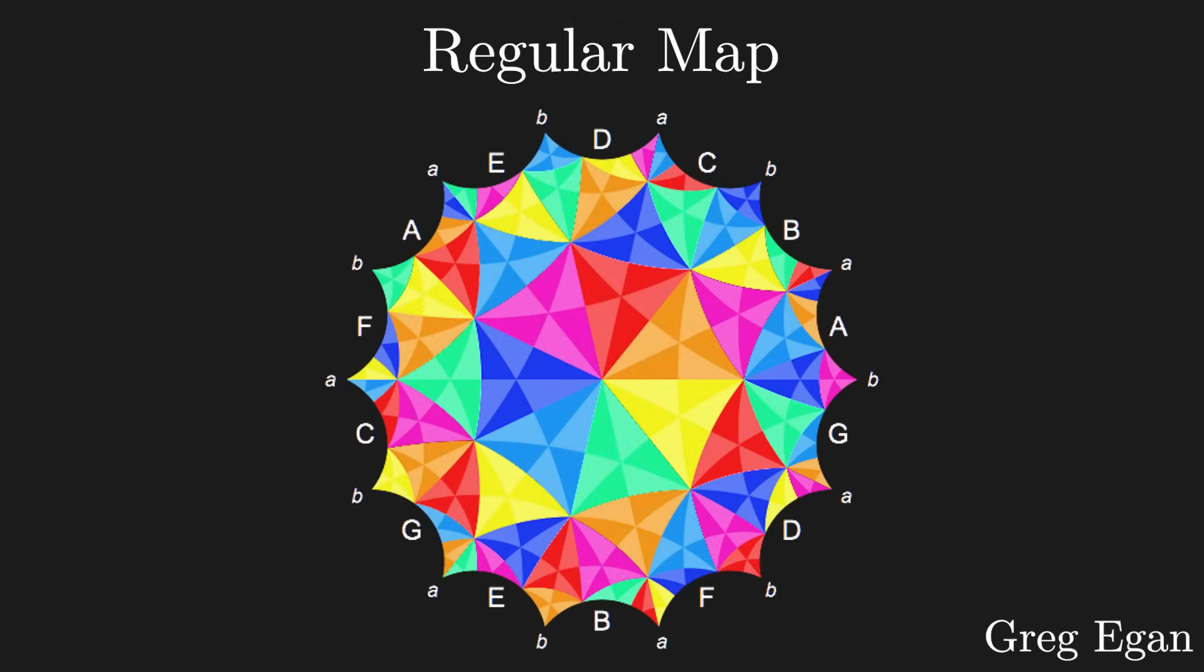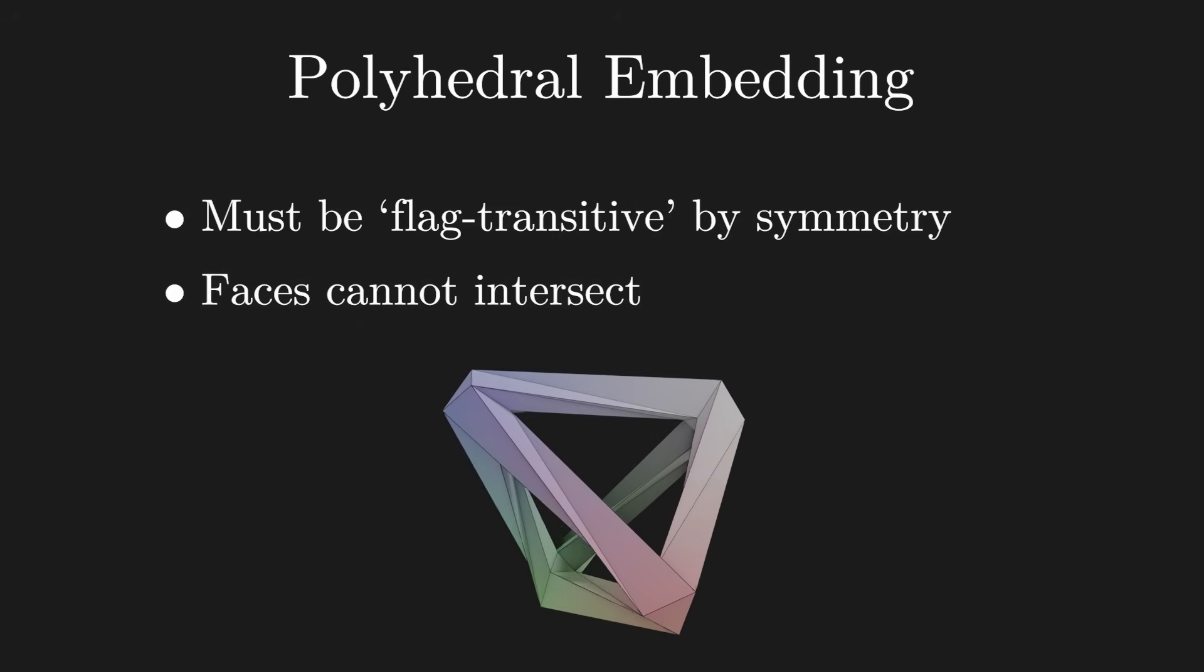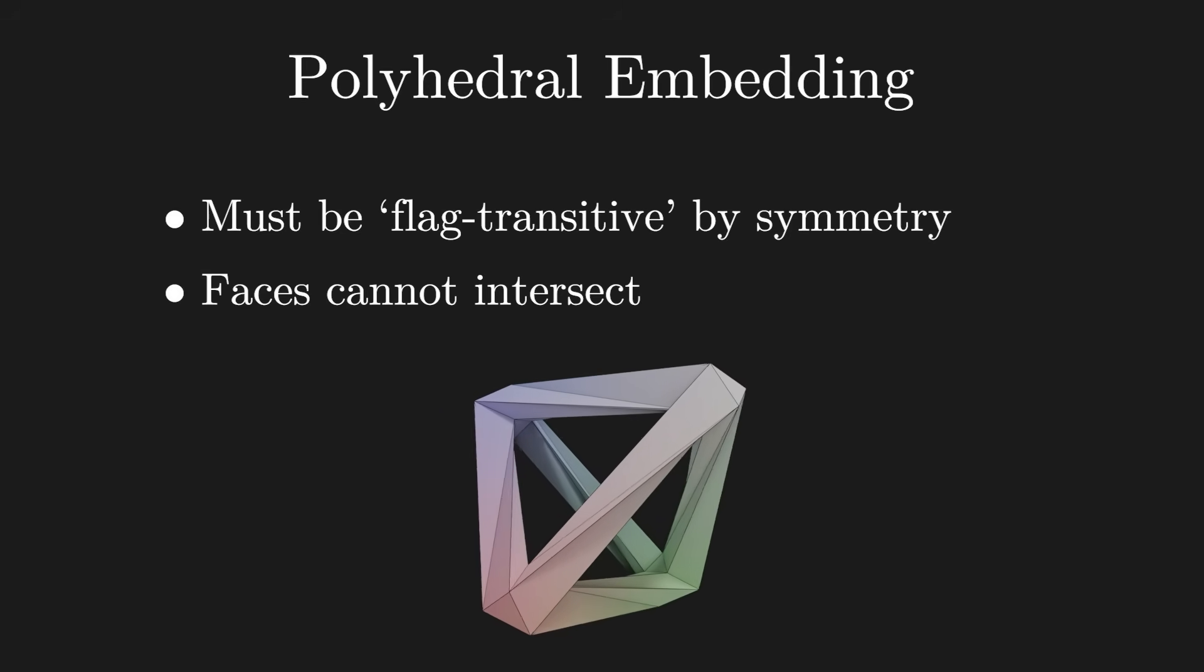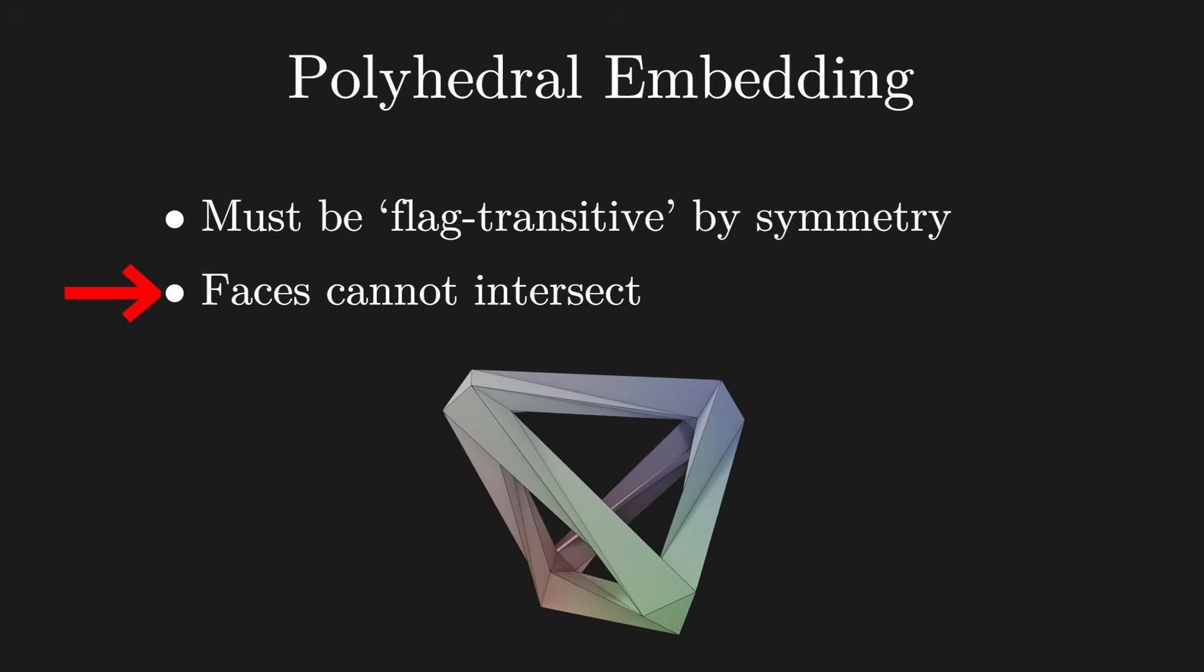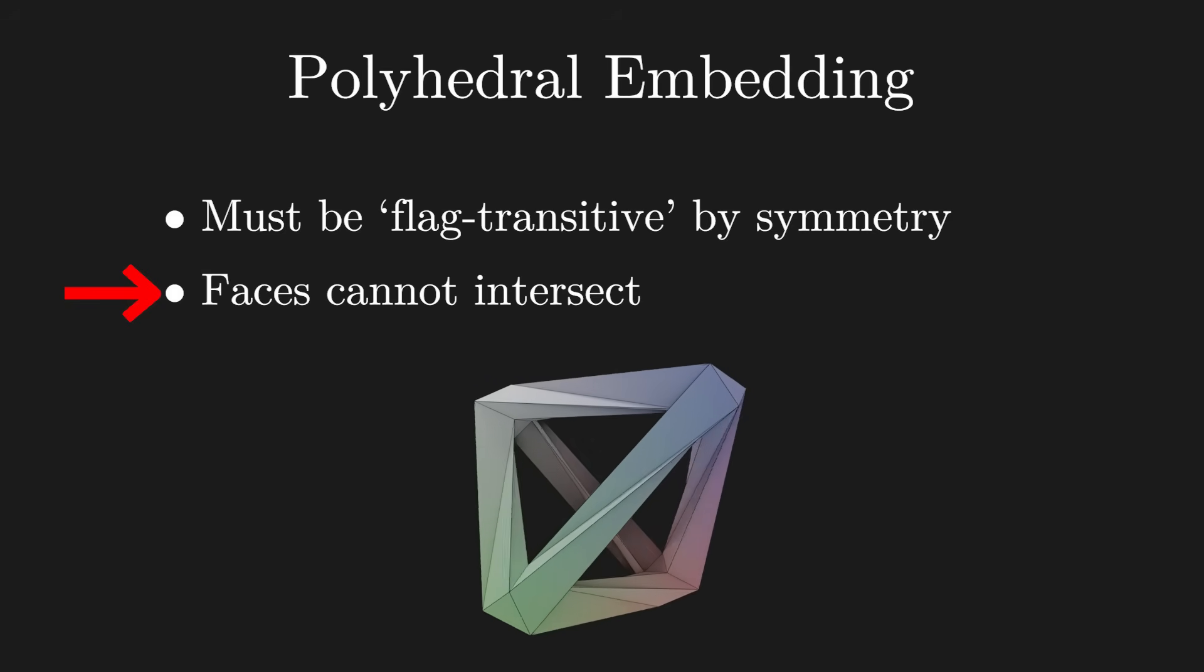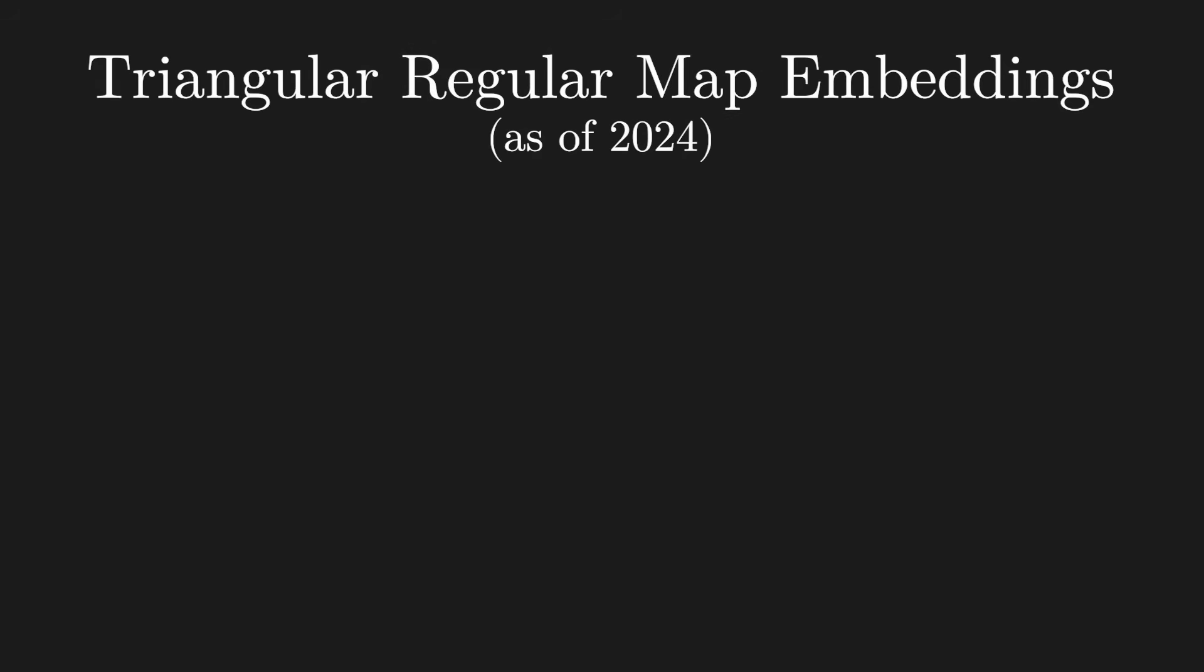These edge graphs are what we call the regular maps. But they're not polyhedra yet, they're abstract. But if we can make them into actual polyhedra from our definition, then we've found what's called an embedding. Since these maps already satisfy this condition, it's the last condition that makes things difficult. For reasons I'll get into later, let's just focus on regular maps of triangles for now.